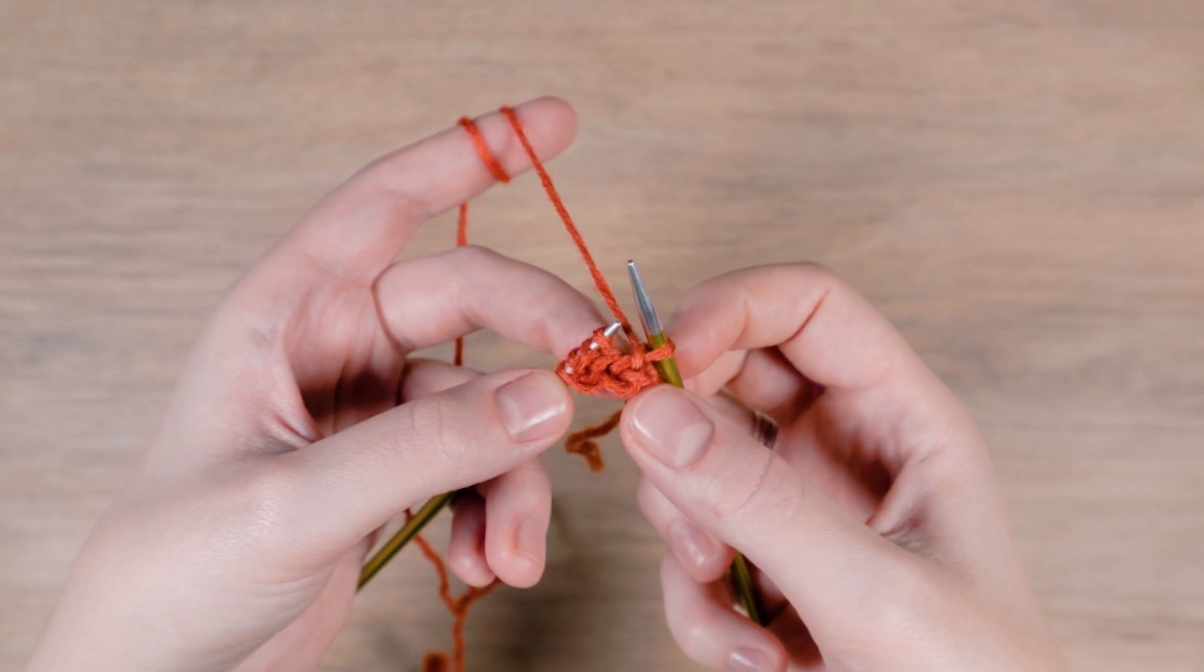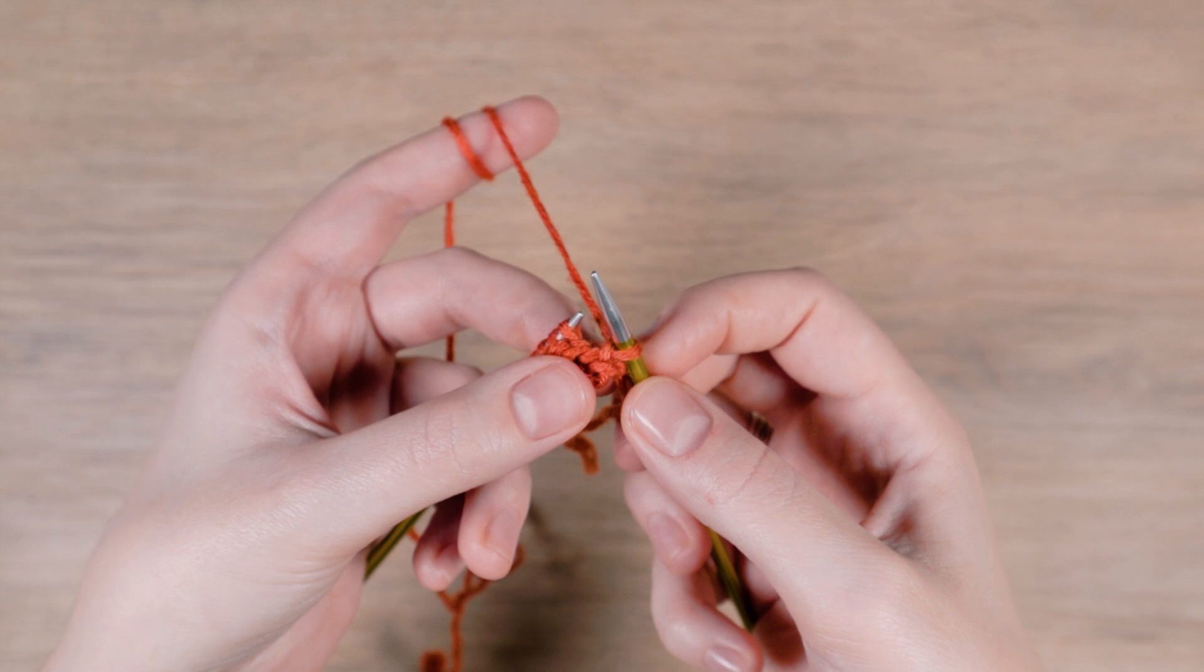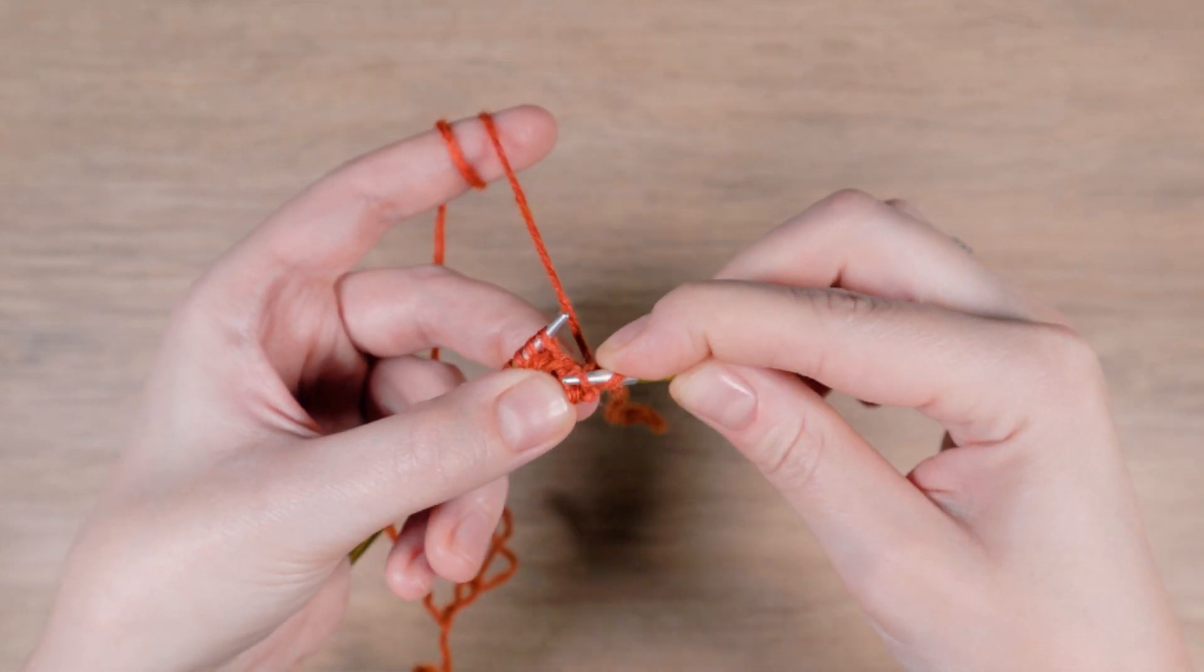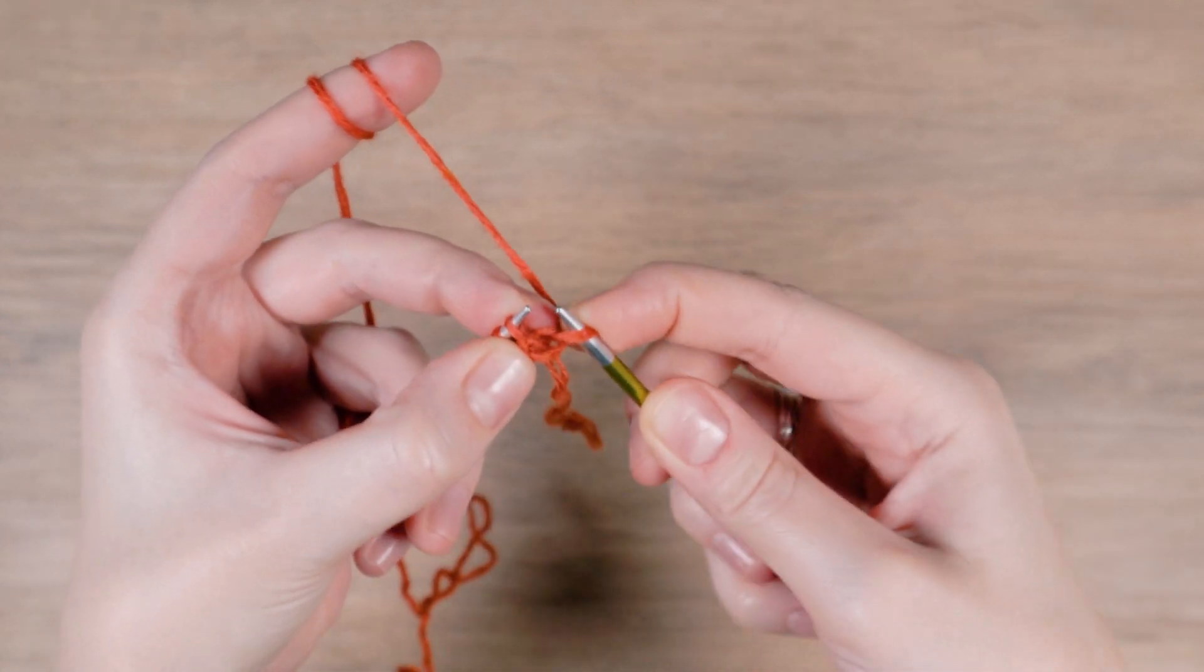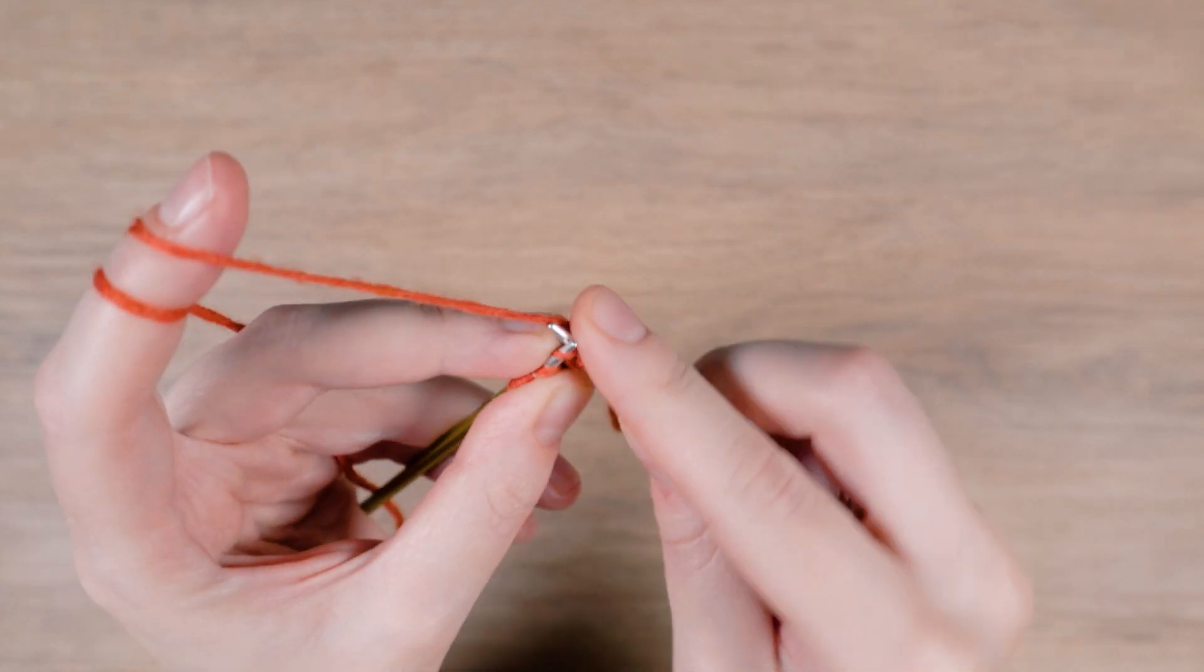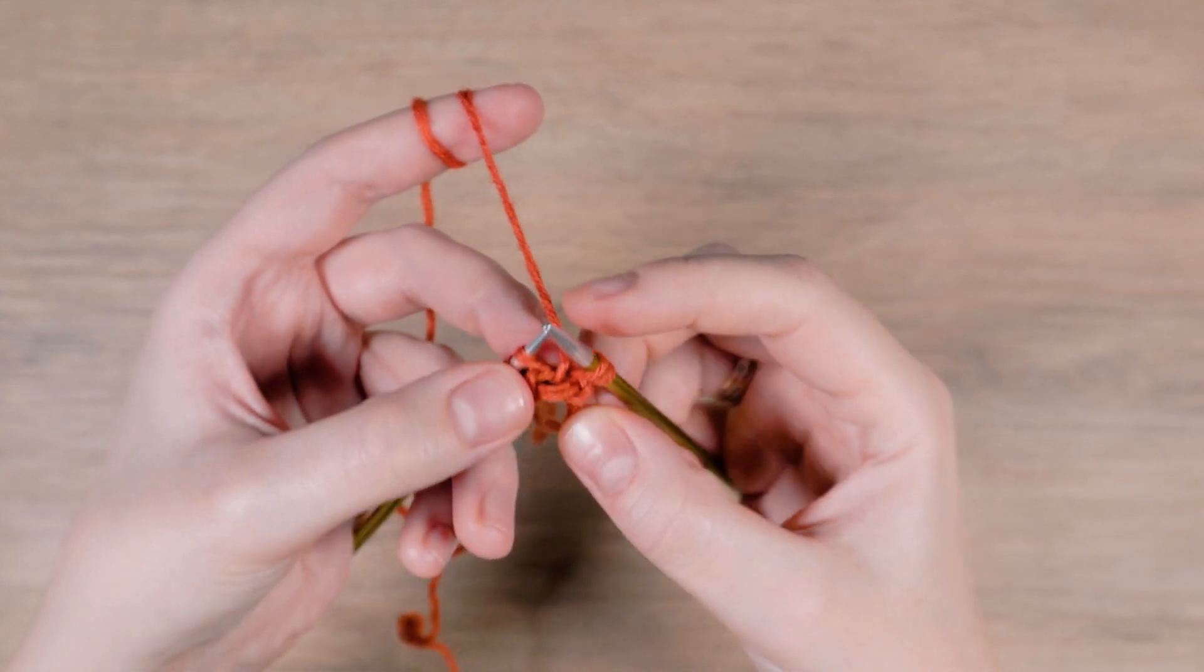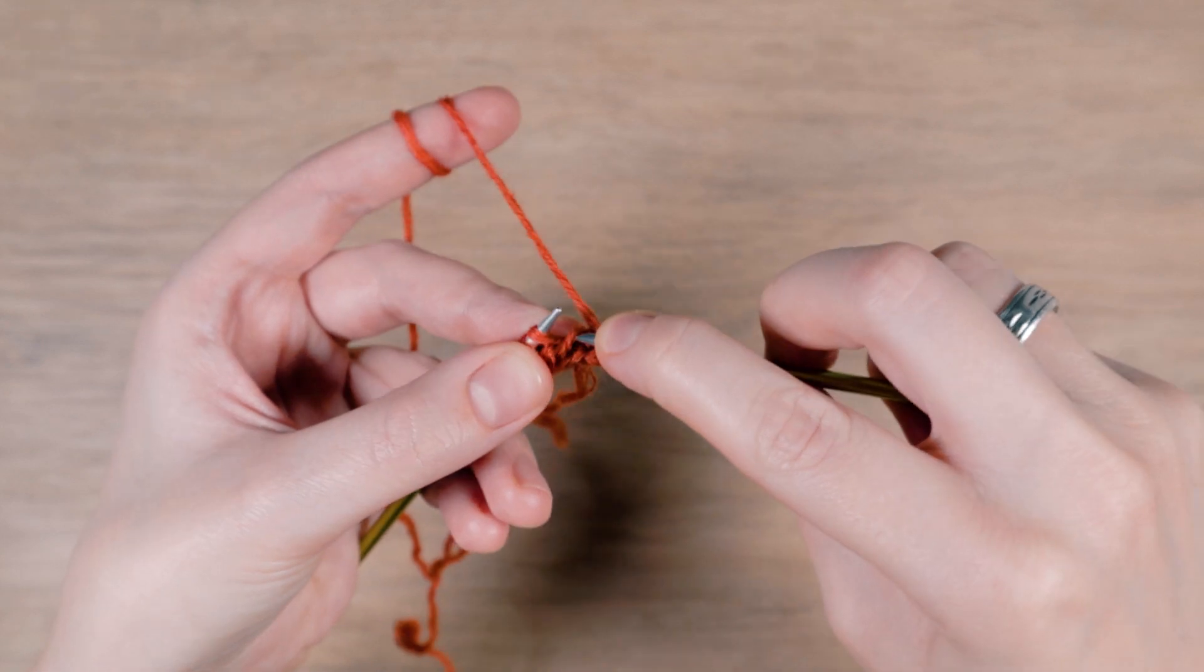Next pick up two stitches that are to the left of that stitch. So put the strand onto your left needle and knit it. Again pick up the strand and knit it.